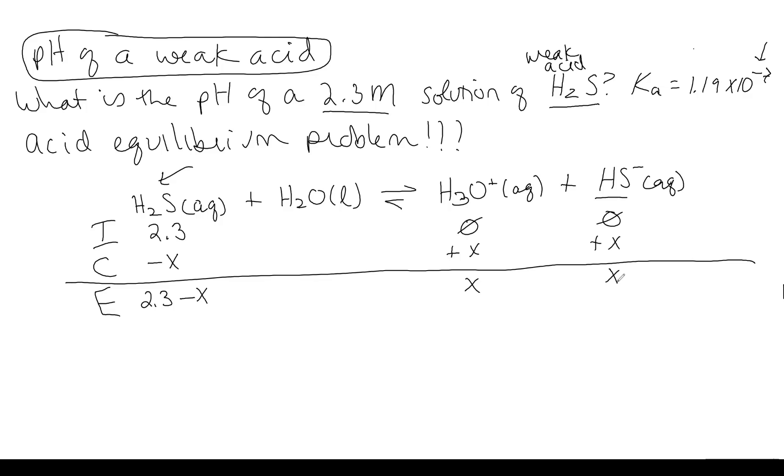So now we're ready to build our equilibrium expression. Luckily for us, we were given Ka for an acid. So that means we do not need to use this relationship to figure out the other one. Remember, Kw is equal to Ka divided by Kb. And that's how we can convert between Kb and Ka. But since we were given Ka directly, we don't have to worry about that.